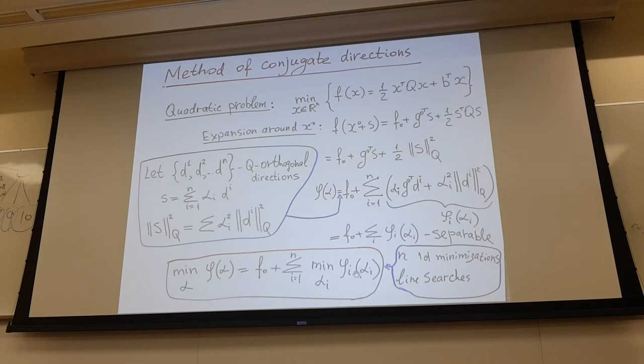Then there is just a set of one-dimensional minimizations. Or in other words, one can see, if you look carefully, we just minimize our entire quadratic function first in direction d1, then at the point when we are after first line search, we minimize in direction d2, and so on.